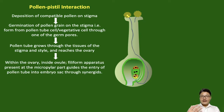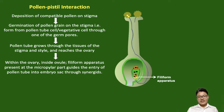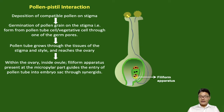After the pollen tube enters the ovule, inside the ovule there is a structure called the embryo sac. To guide the pollen tube into the embryo sac, we have a structure called the filiform apparatus — a yellowish finger-like projection shown here — which helps guide the pollen tube into the embryo sac.